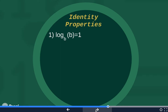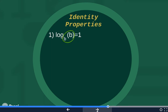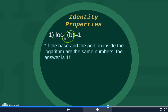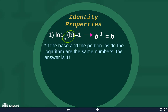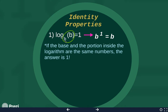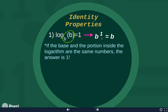The next properties we'll be talking about are the identity properties with logarithms. You should have noticed in class that whenever the base of the log is the same as the number inside of the log, it always equals one. You're looking for that repetition from the base to the number inside the log. The reason why: if we convert this into an exponential, B raised to the first power equals B. Anything to the first power is itself. So that's why when the base and the number inside the log are the same, it equals one. Remember, logarithms are exponents.